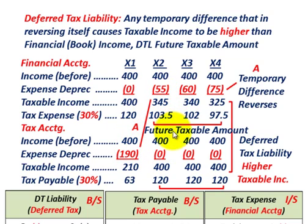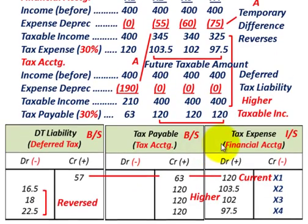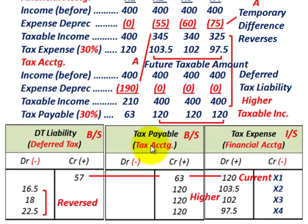Let's look at how we record this. You're going to set up three accounts: a deferred tax liability account, taxes payable based on tax accounting figures, and tax expense based on financial or book accounting.